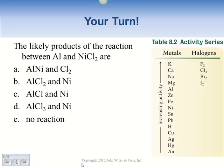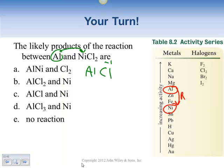For the most likely products of the reaction between aluminum and nickel chloride: comparing aluminum and nickel, since aluminum is above nickel there will be a reaction. Aluminum displaces the nickel, giving us an AlCl compound. Chlorine is minus one and aluminum is plus three, so we need three chlorines to balance — giving us AlCl₃.